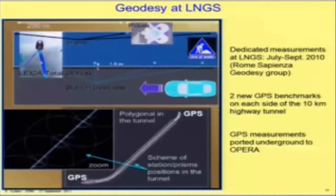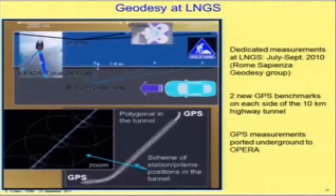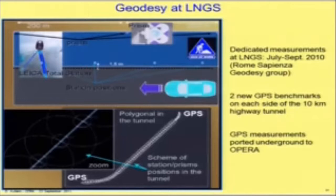The geodesy is a very important ingredient, and in order to be accurate we had a dedicated campaign at Gran Sasso in 2010. The main difficulty is not to measure the positions outside but to bring them underground, as you can expect. During this campaign, two new GPS reference points were installed at the two ends of the highway tunnel, and this information was brought underground by independent optical triangulations. By doing this we introduce a systematic inaccuracy of the order of 20 centimeters, which dominates our measurement.